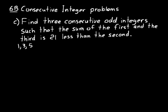And notice how they're all two apart. So if we called the first one n, the second one would be n plus 2. And then the third one would be n plus 4.